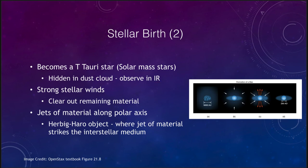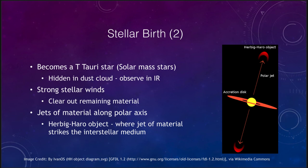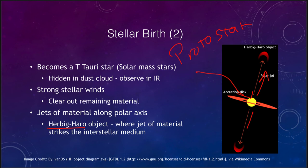The jets of material come out and impact into the rest of the material, and the strong stellar winds will clear out this material, eventually leaving the protostar behind. What those jets do as they come out is impact the remaining material, forming what we call a Herbig-Haro object, named after the two astronomers who studied these early on. The protostar is at the center with an accretion disk around it.